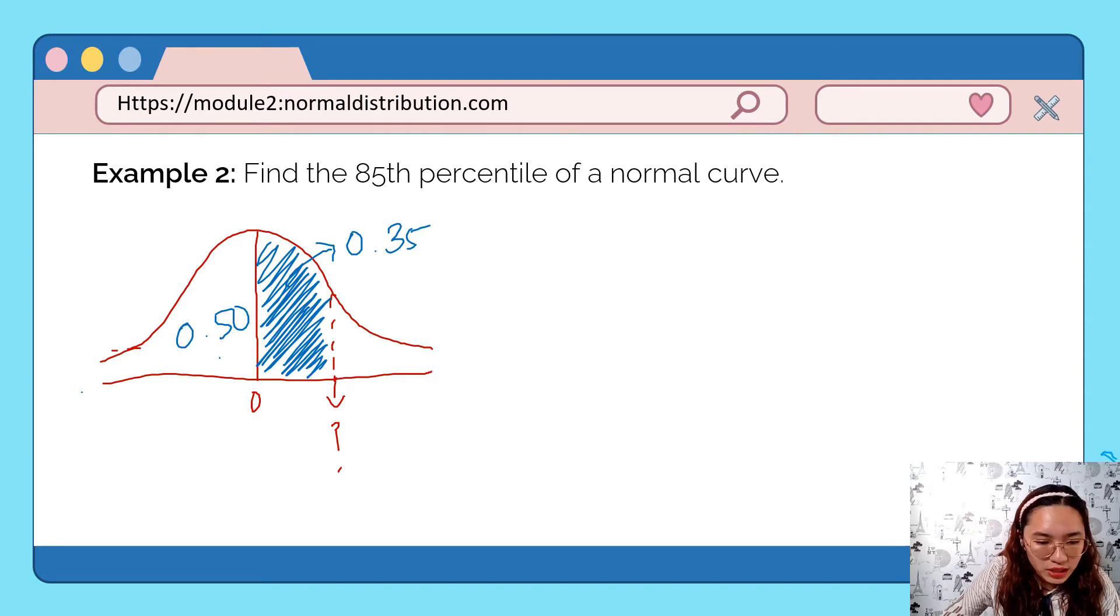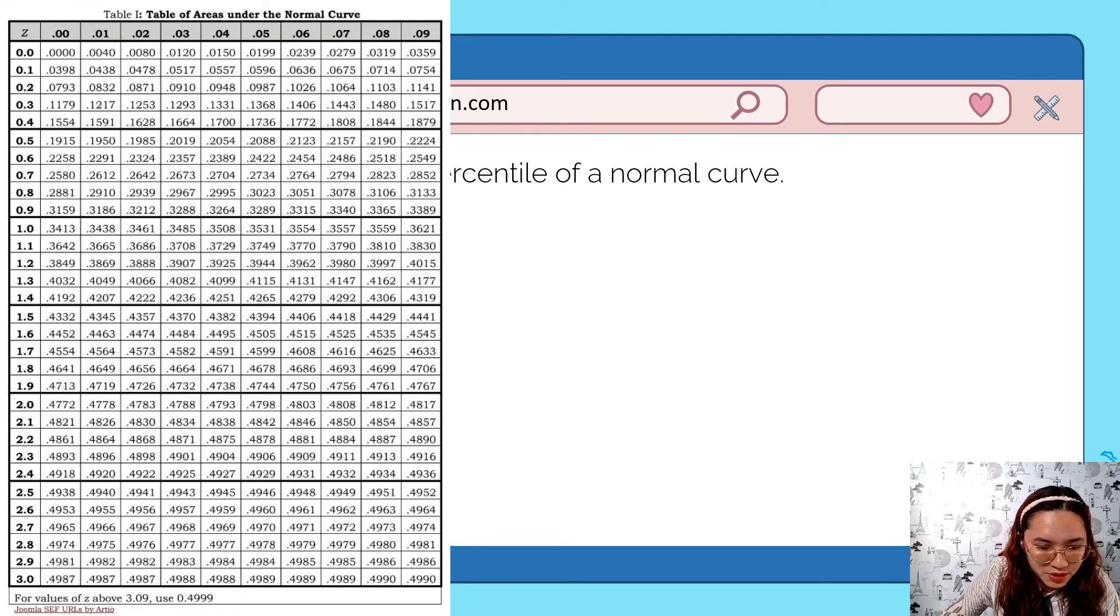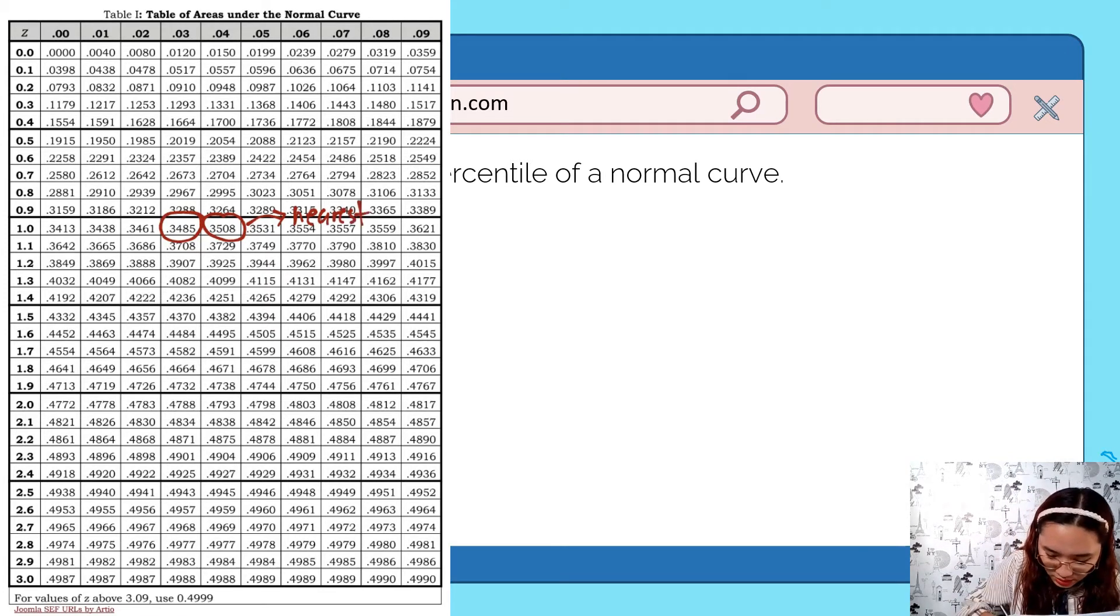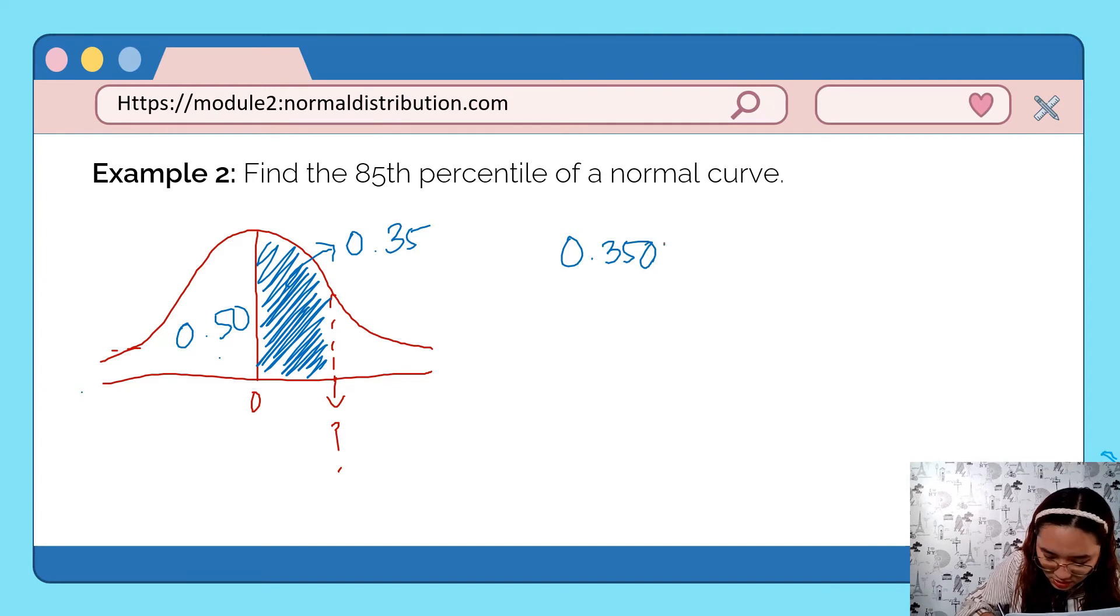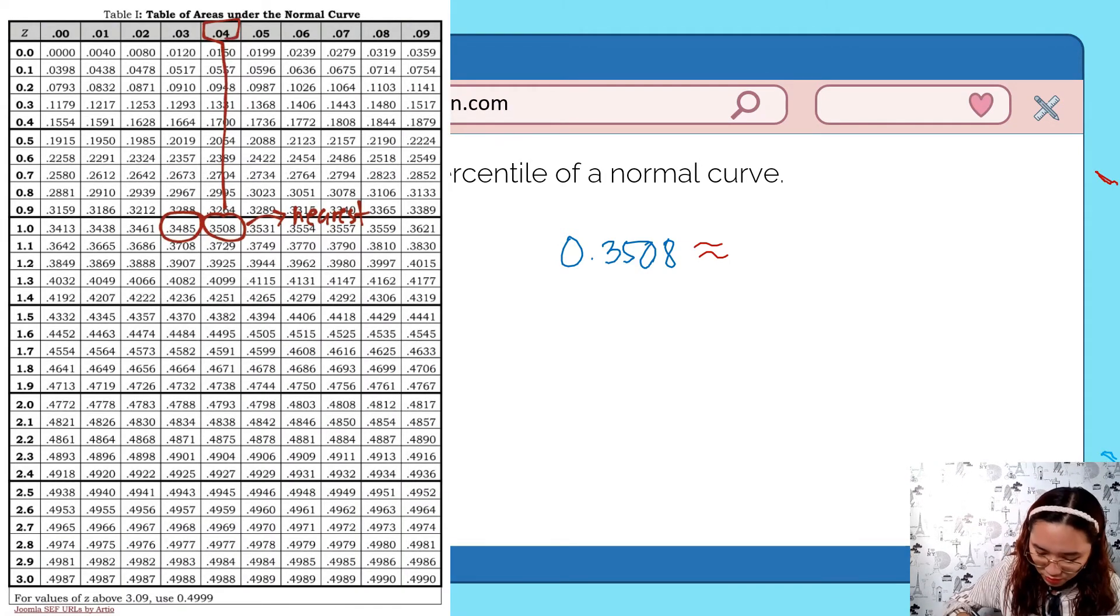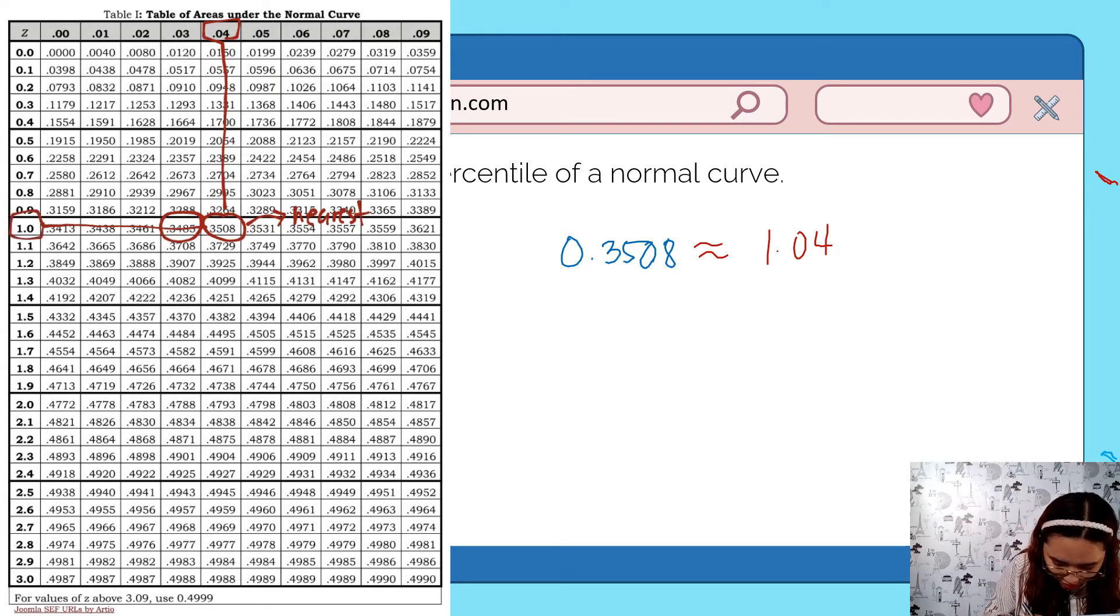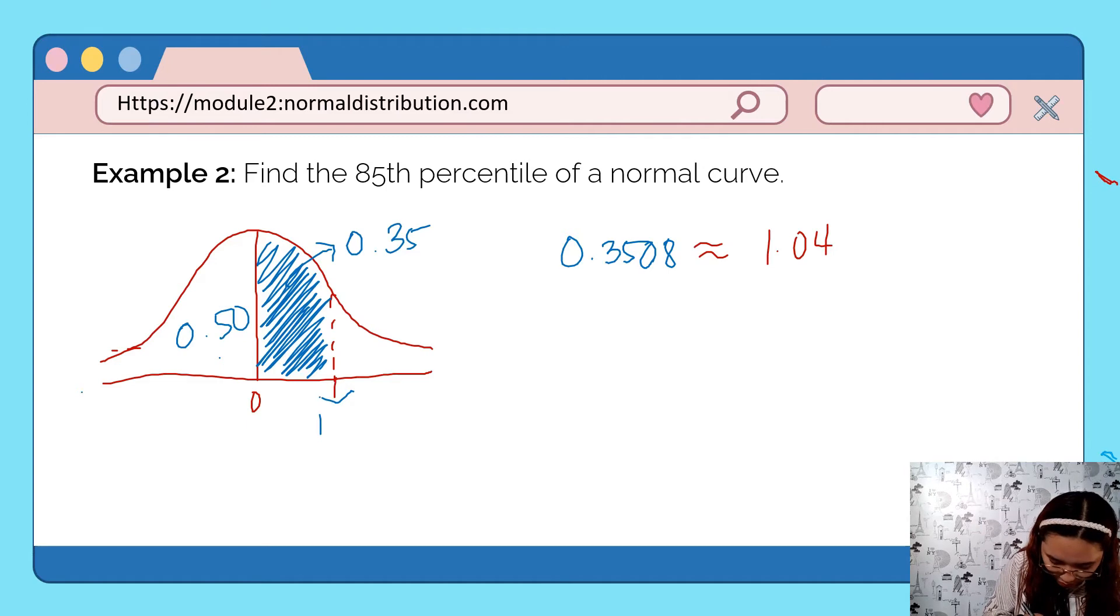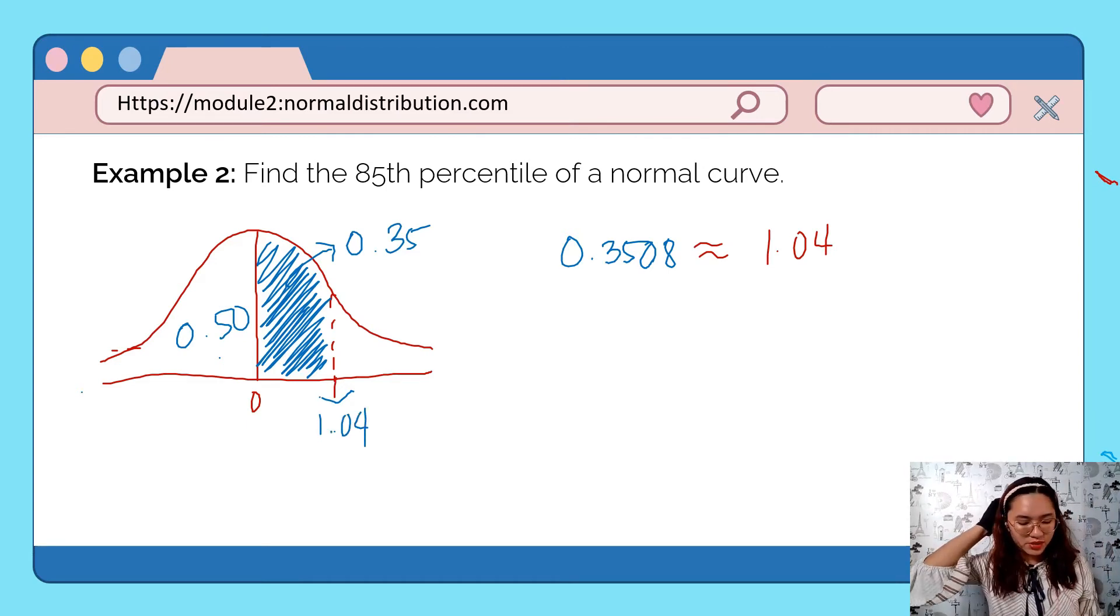0.35 - there's no exact match. Let's take the nearest. The closest I see is 0.3508 which is only 0.008 away. The next one is 0.3485, which is about 0.0015 away. So 0.3508 is still closer. And the corresponding z-score for 0.3508 is 1.04. So our unknown location is 1.04. The location of the 85th percentile is 1.04. It's that simple.